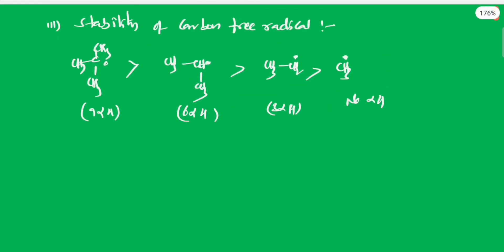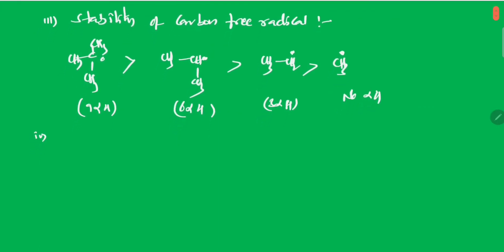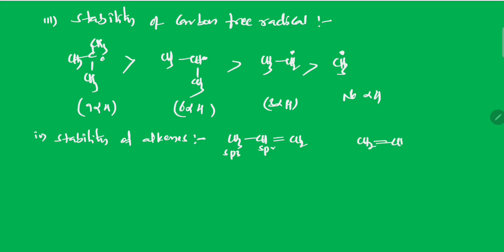Hyperconjugation also explains the stability of alkenes. For example, CH3–CH=CH2: the SP3 alpha carbon has three alpha hydrogens and shows hyperconjugation, so it is more stable. A compound with no alpha hydrogen shows no hyperconjugation.